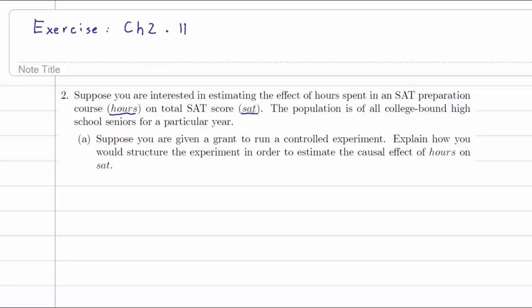You're given a grant to run a controlled experiment and you want to structure the experiment in order to estimate the causal effect (causal here is important) of hours on SAT. So you got this money, you have to design the experiment - what do you do?